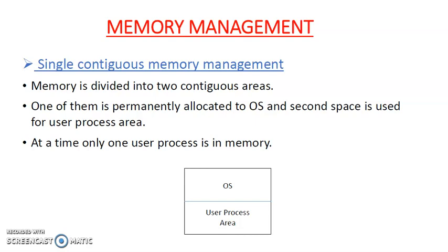So what is the exact meaning of this management technique? Memory is divided into two contiguous areas, as you can see in the image below. The first area is the operating system — it is permanently allocated to the operating system. The second space is used for the user process area. At a time, only one user process is in memory. This is single contiguous memory management.